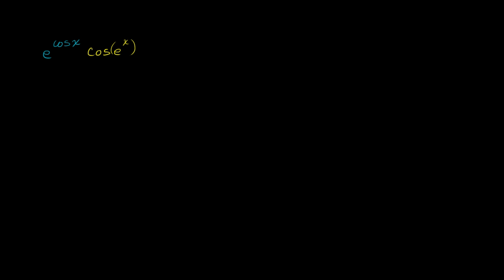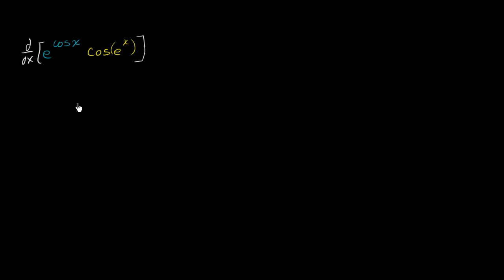Let's now use what we know about the chain rule and the product rule to take the derivative of an even weirder expression. We're going to take the derivative of e to the cosine of x times the cosine of e to the x.